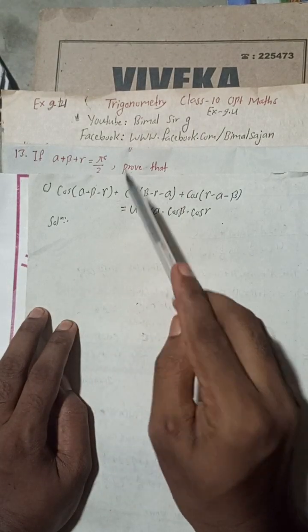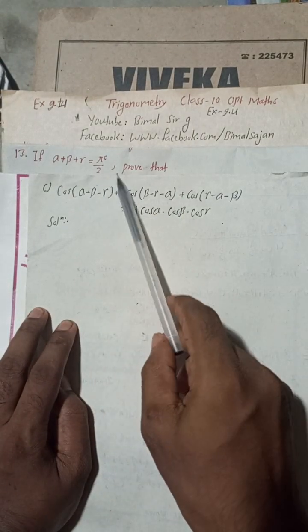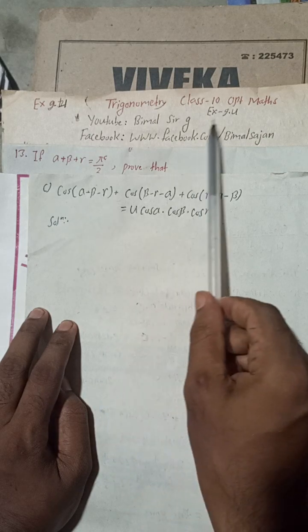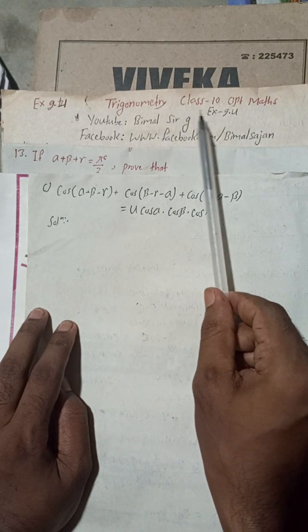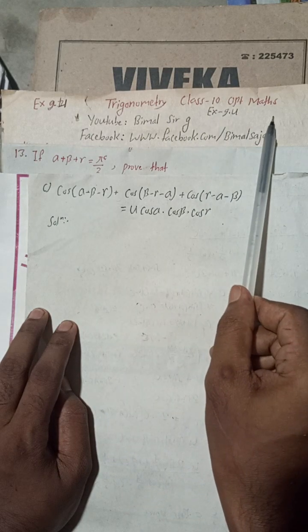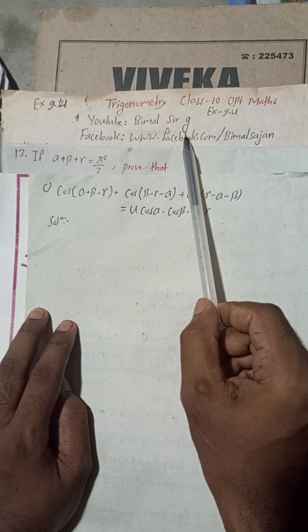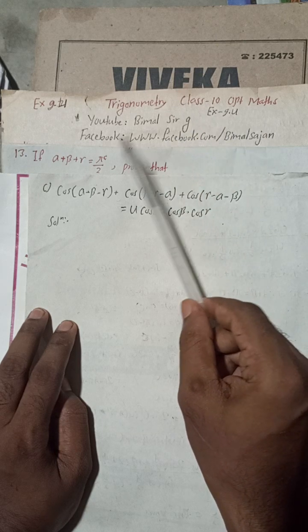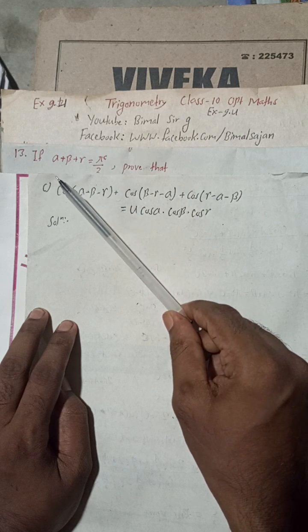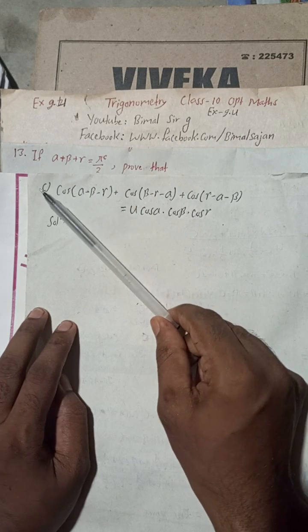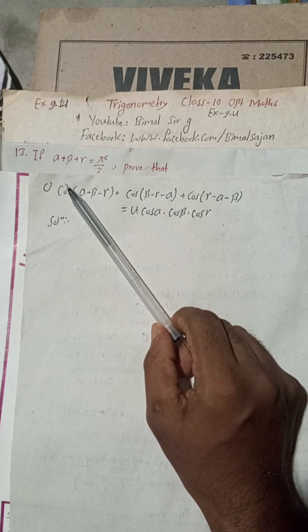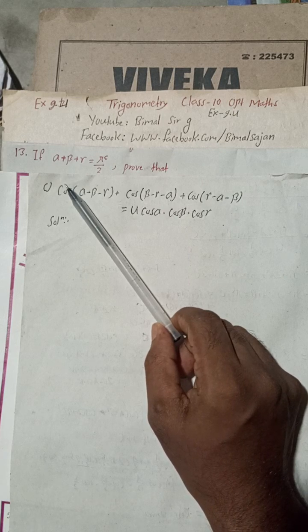Hi everybody, welcome back to Beamer Sarji's YouTube channel. This is question number 13c of Exercise 9.4, Trigonometry, Class 10 Optional Mathematics. You can check the playlist — you'll get a lot of solutions for Class 9 and 10. I have already solved questions 14, 15, and 16 of this chapter, and I am solving from last to first.